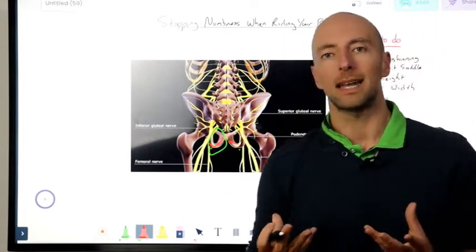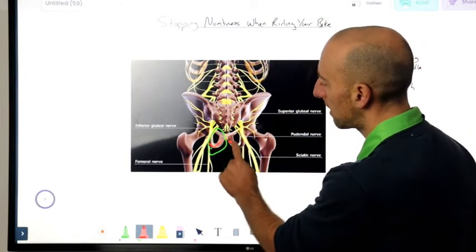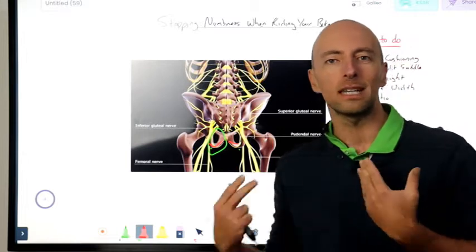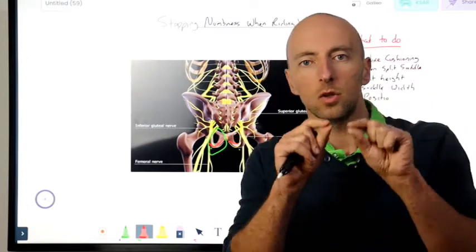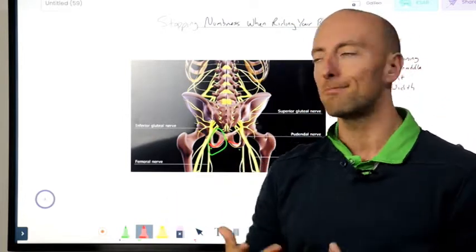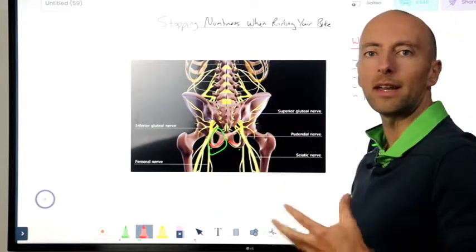So when we're sitting down, what has happened over a period of time is we compress that nerve and we compress the area, that whole soft tissue bundle called your perineum in that area there. And as we cause that compression, we squash the nerve and we don't allow for proper neurological transmission. And this is what tends to create that numbness feeling, right through that area.